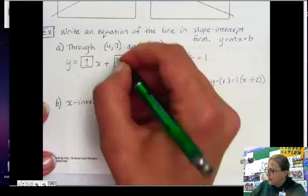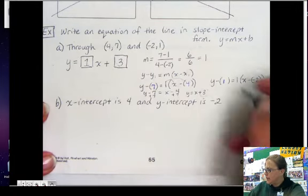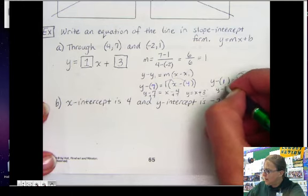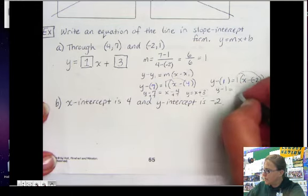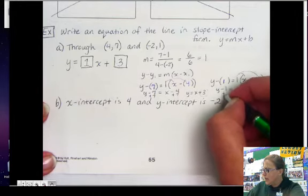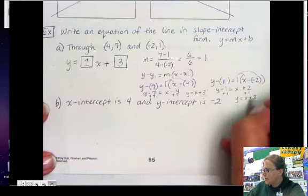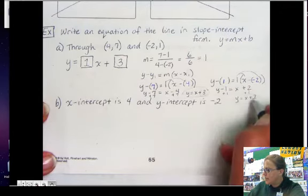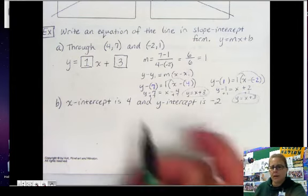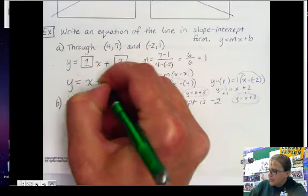And so notice that my 3 goes here. So let's figure that out over here now. Let's do our distribute of the 1, so y minus 1 equals, distribute the 1, you get x minus negative is plus 2. Add 1 to both sides, and you get y equals x plus 3. Notice we got the same answer both ways. So it doesn't matter which point you use. So my answer then is y equals x plus 3.